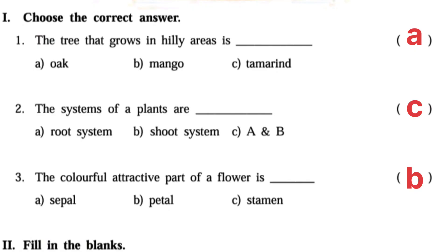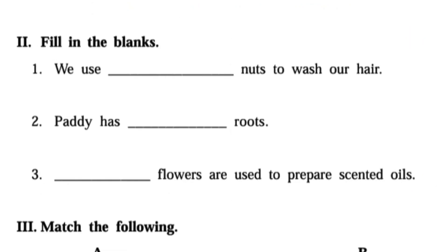Next one, choose the correct answers. The tree that grows in a hilly area — A: Oak. The systems of a plant are — C: root system and shoot system. Third one: the colorful, attractive part of the flower is — B: petal.